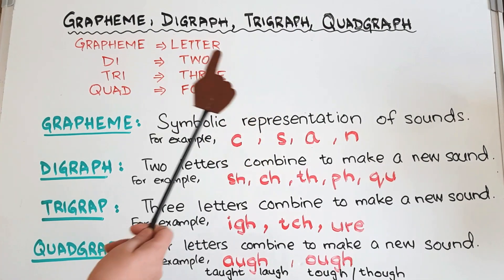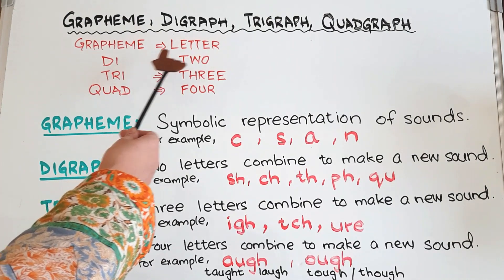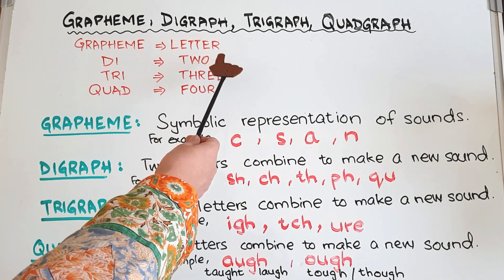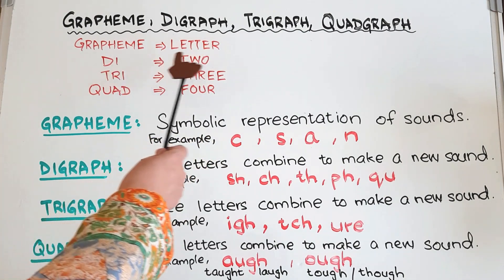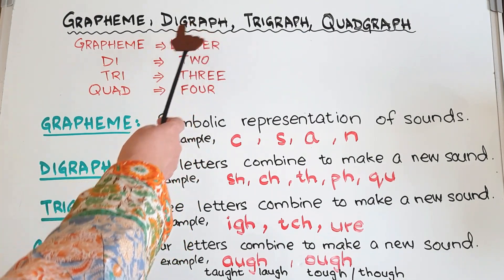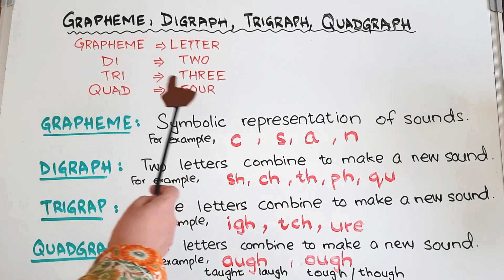The first thing is grapheme. Grapheme or graph means letter. Any symbol that is used to represent a sound. Di means two, as in digraph means two letters. Tri means three and quad means four.